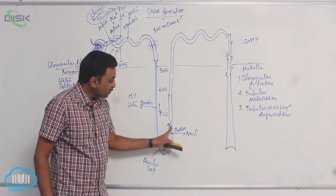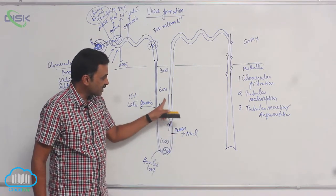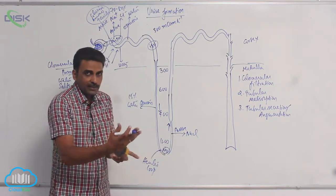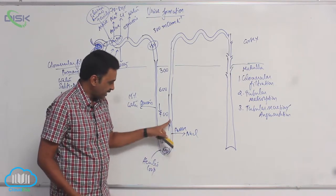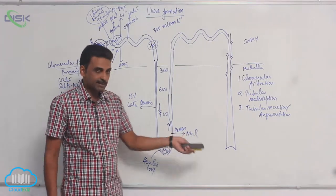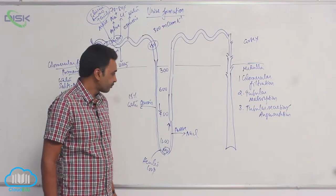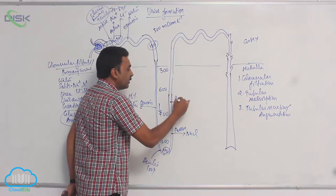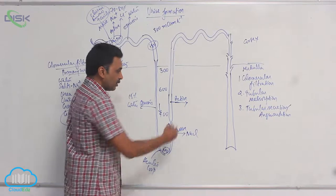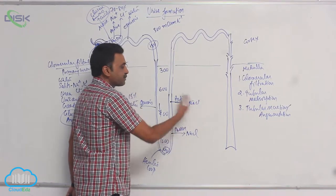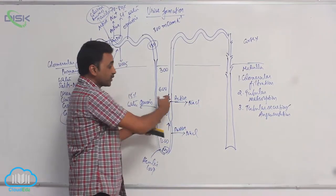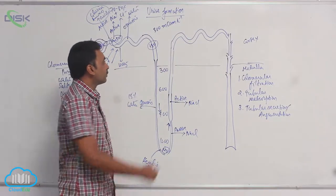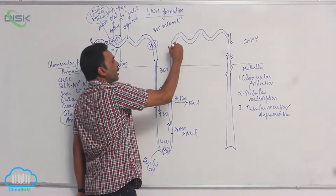As the fluid moves upward through the ascending limb, there is a decrease in the concentration of medullary fluid outside. So passively, some salts leave in the thin segment of the ascending limb. In the thick segment, by active transport, more sodium chloride is pumped outside. A lot of salts are pumped out, and by the time the fluid reaches the top, it has become hypotonic.